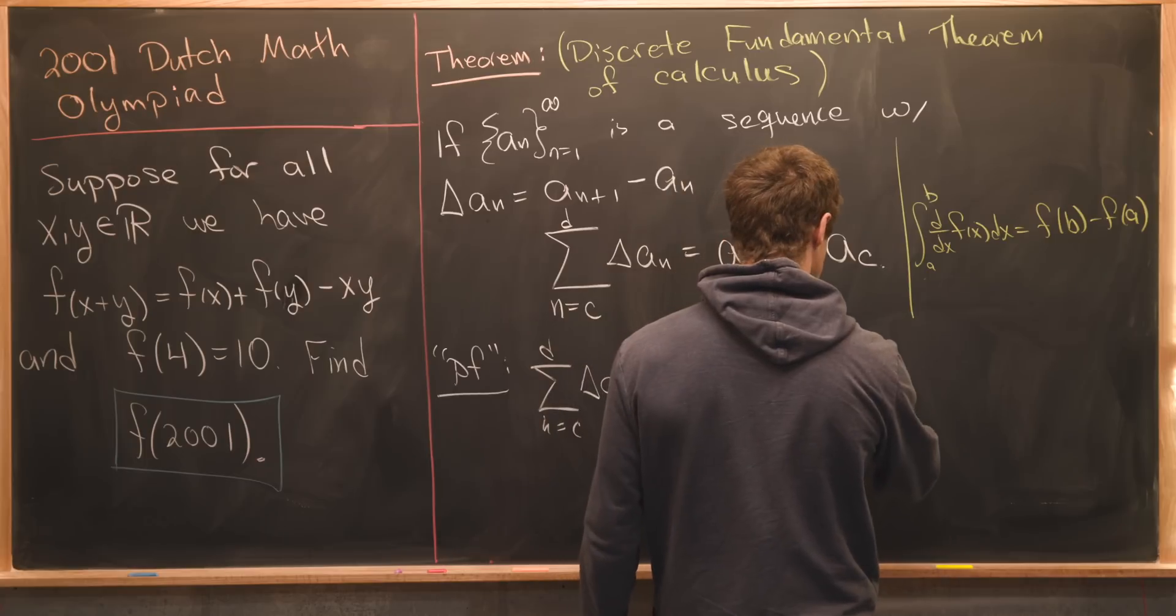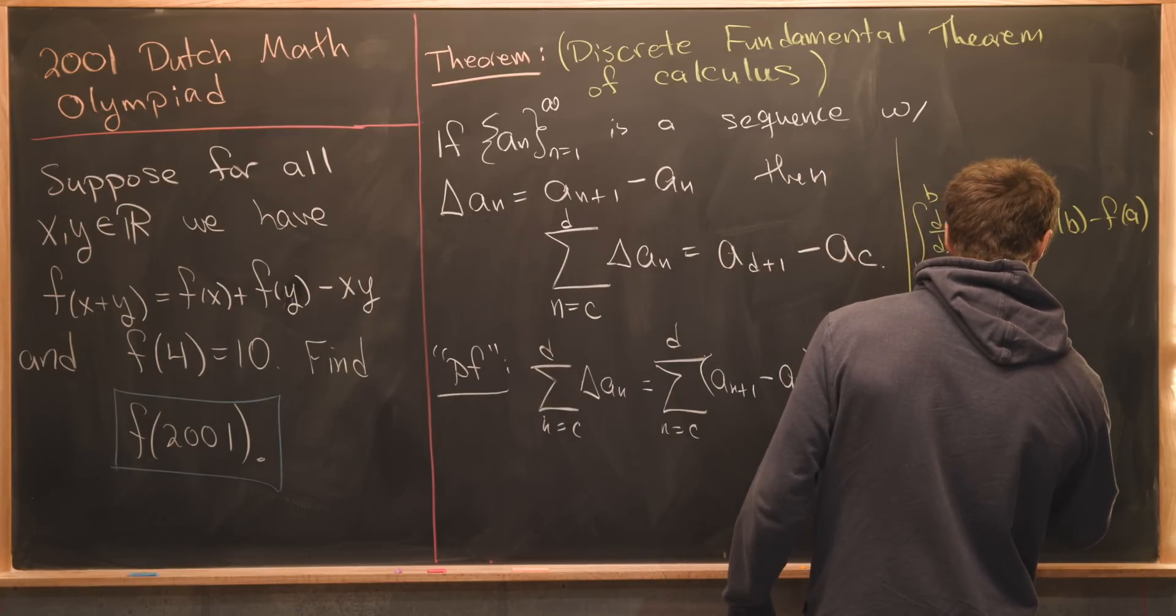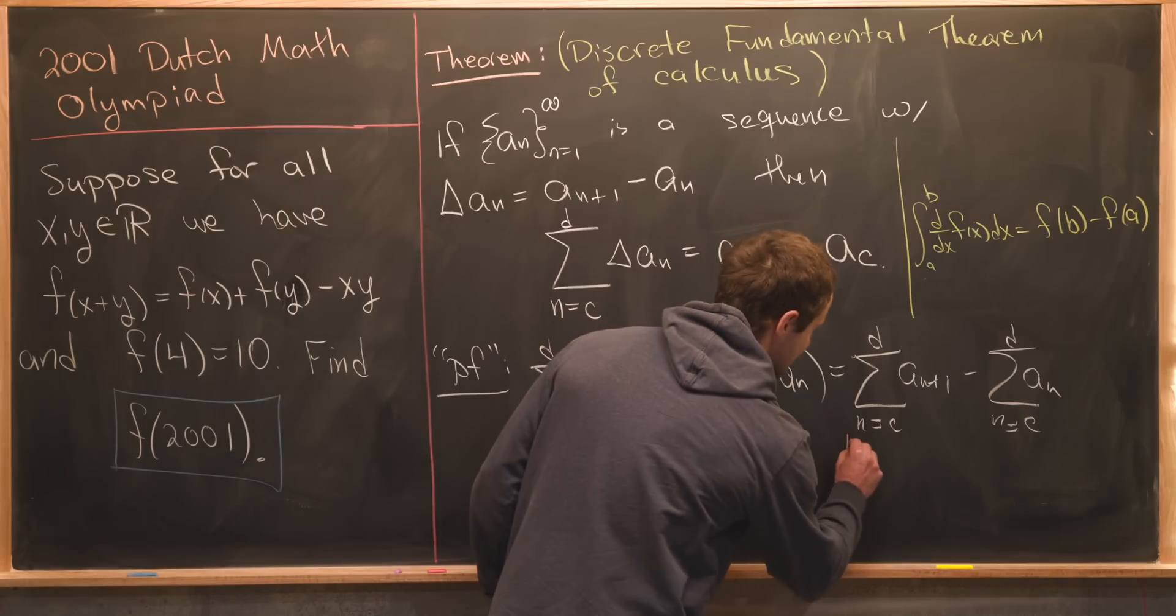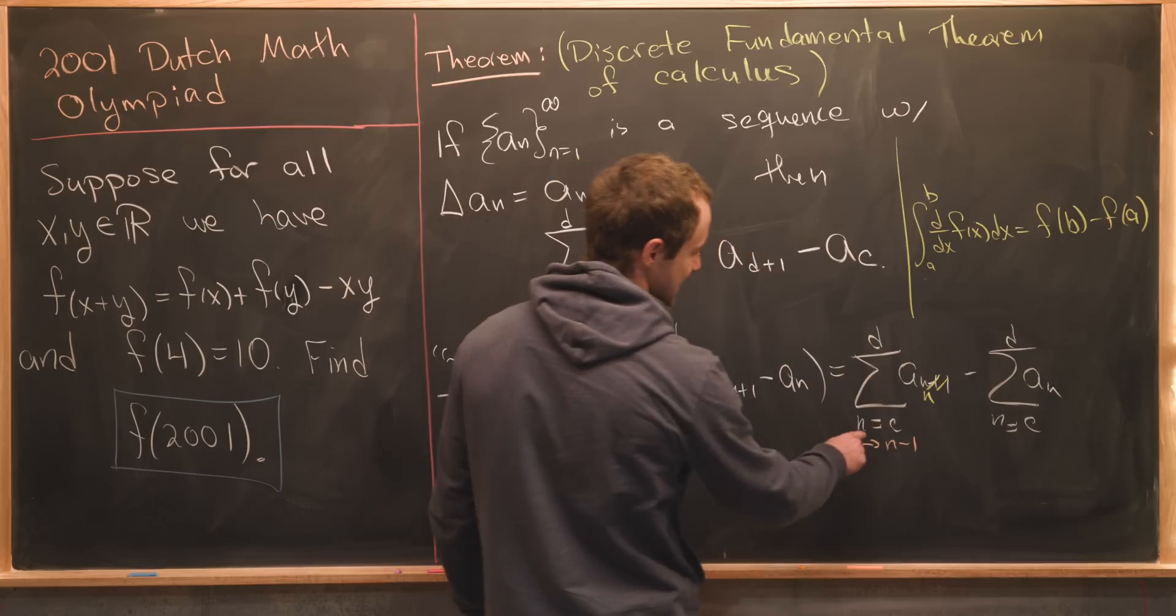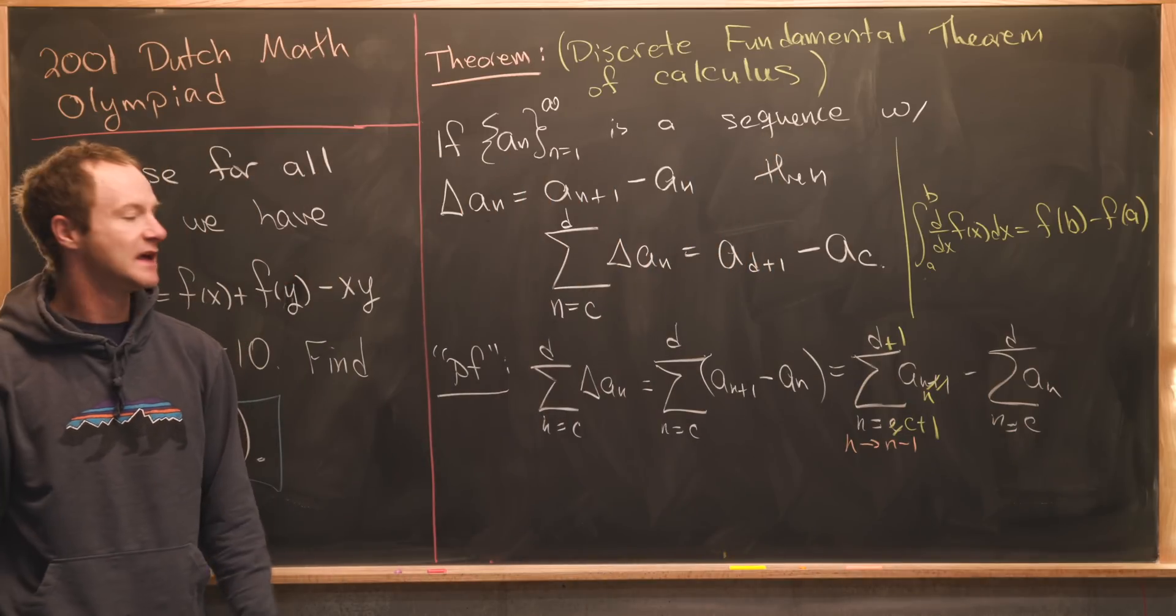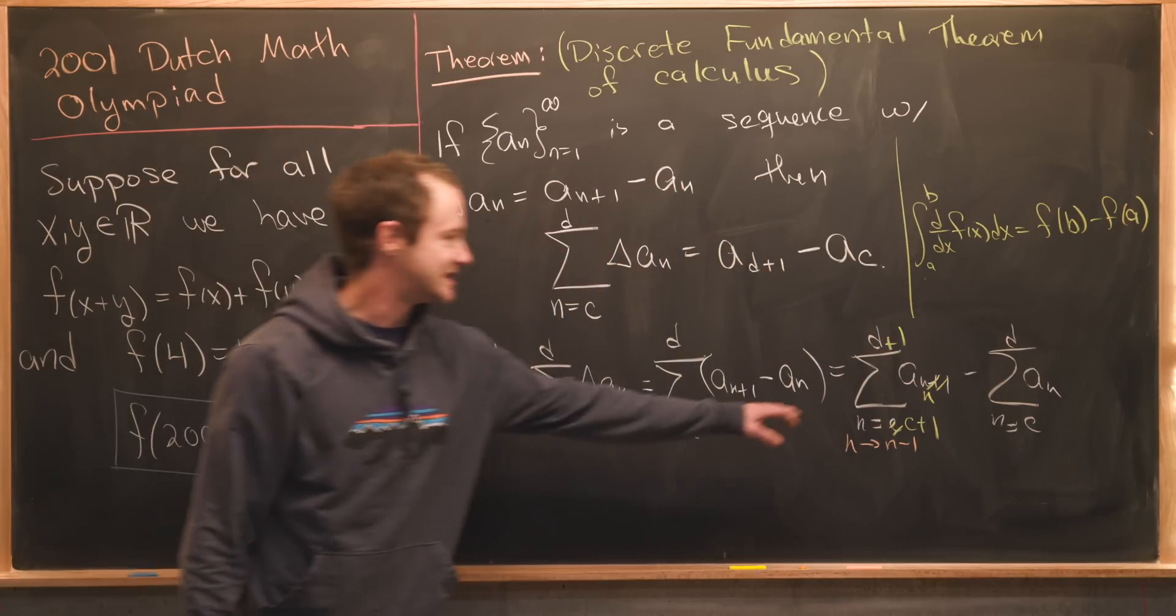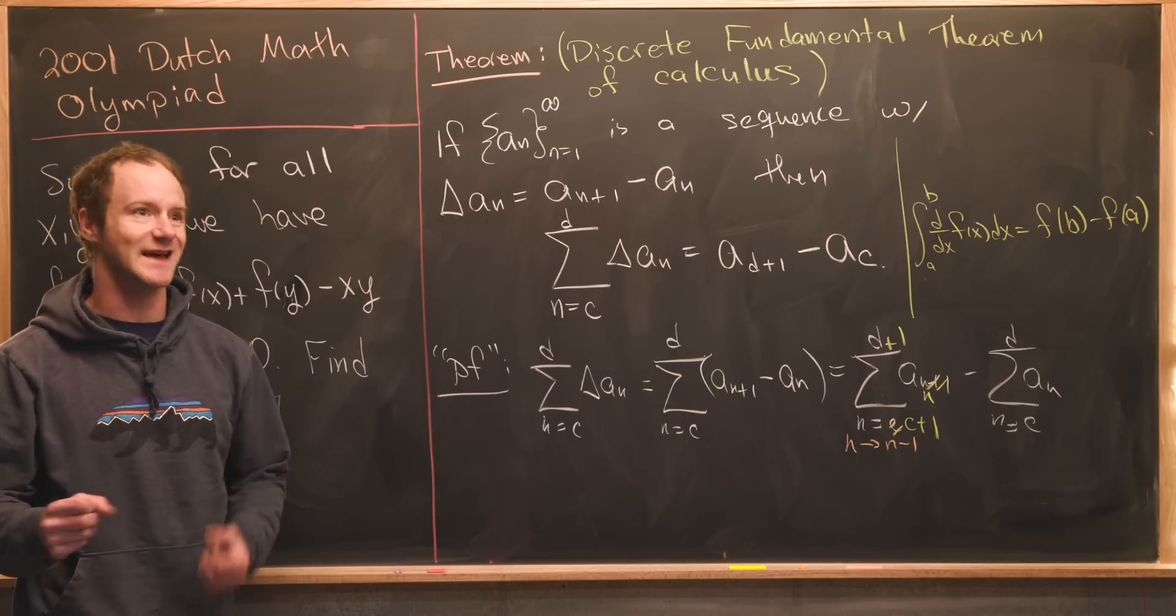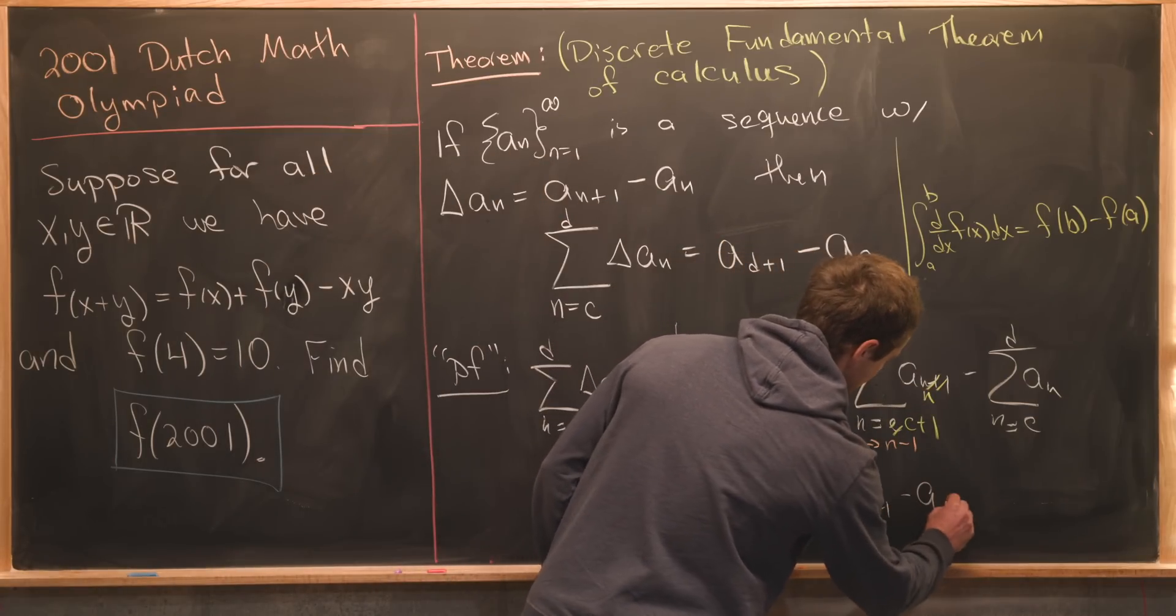Next we can split this into two sums. We've got the sum as n goes from c to d of a sub n plus one minus the sum as n goes from c to d of a sub n. Next we'll re-index this second sum by exchanging n with n minus one. So that's going to change this n plus one to an n, change this n equals c to n equals c plus one, and then we'll have d plus one in the top. Notice that this left hand sum and this right hand sum are almost exactly the same. The left hand sum has a d plus first term and the right hand sum has a c term, whereas otherwise they have all the same terms and they will cancel because we've got a minus sign in between them. So that's why this gives us a sub d plus one minus a sub c.